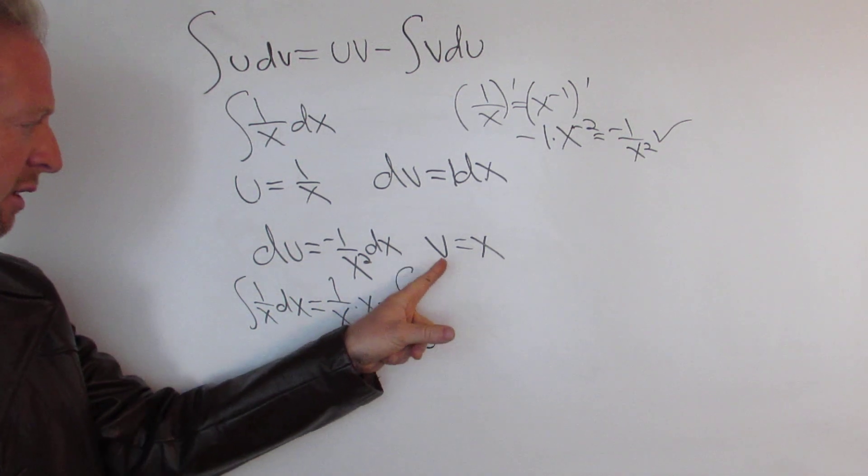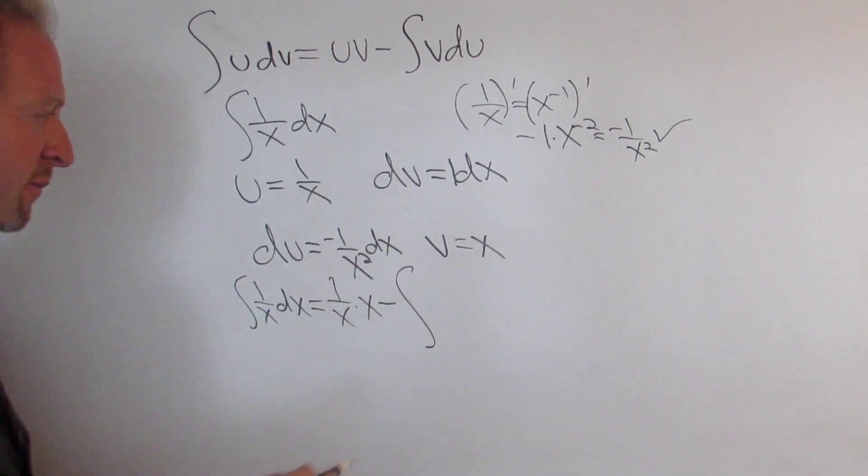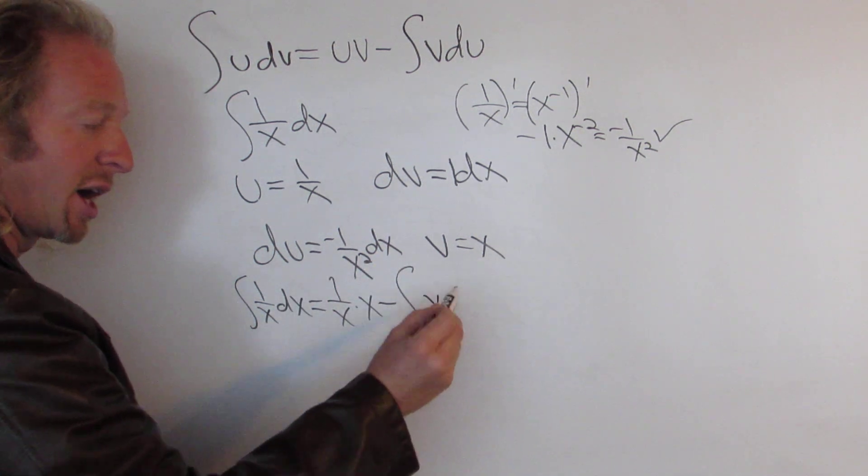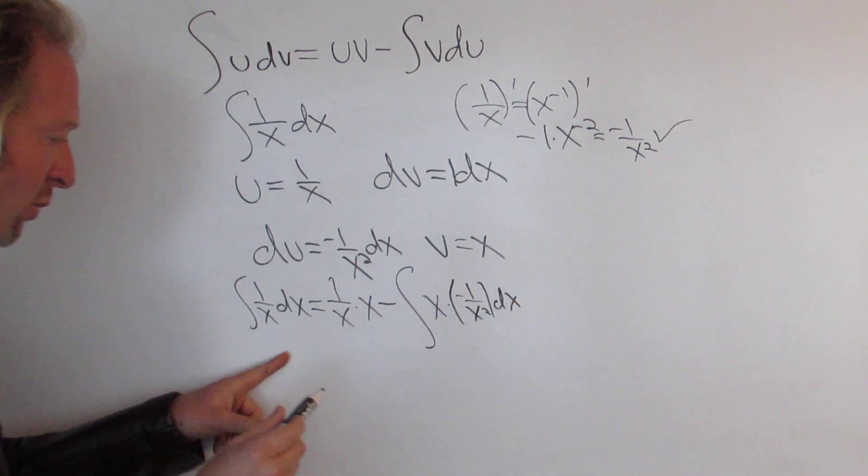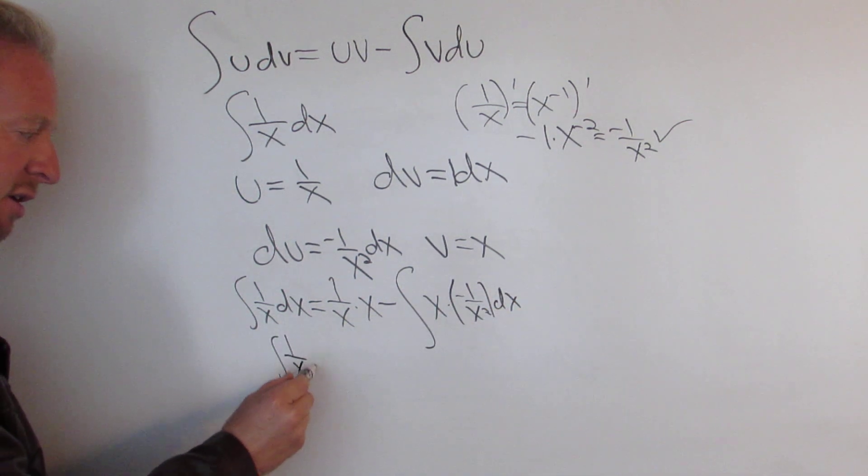Right, so the integral of vdu is going to be this times this. So it'd be x times negative 1 over x squared dx. Right, so we end up with 1 over x dx.